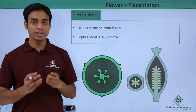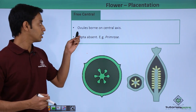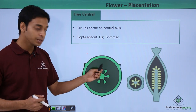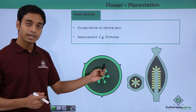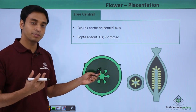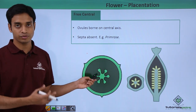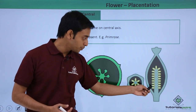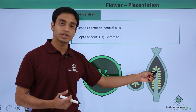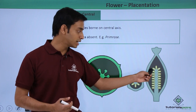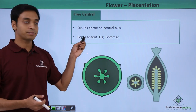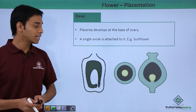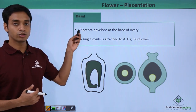The next type is free central placentation. Here the ovules are born on a central axis. The ovary is single-chambered and is not divided by septa — septa are absolutely absent. The ovules are present on the central axis, and a good example is primrose.